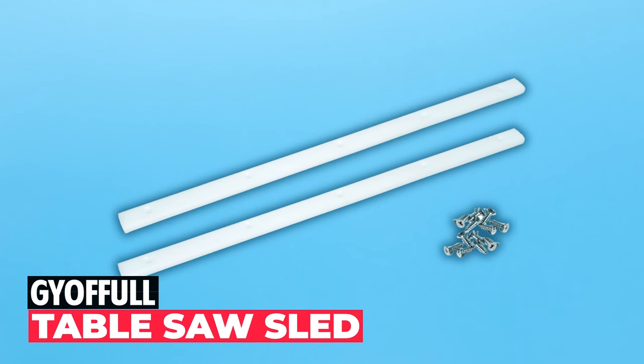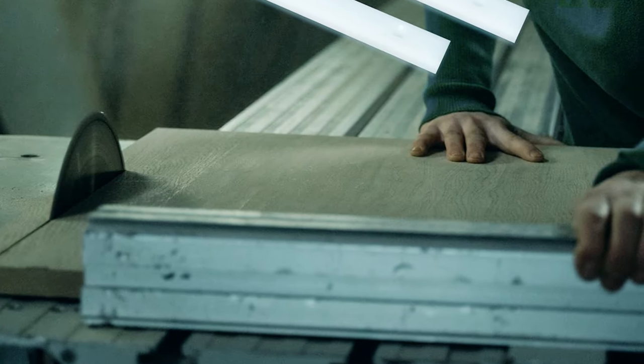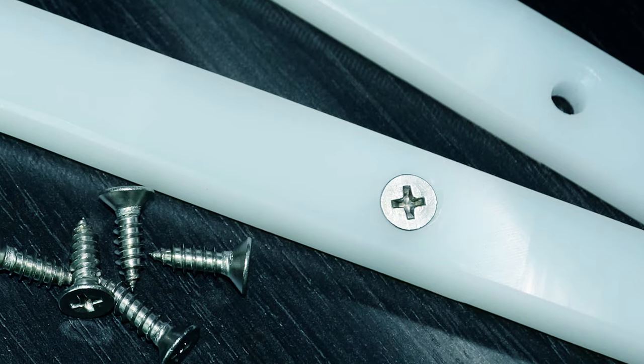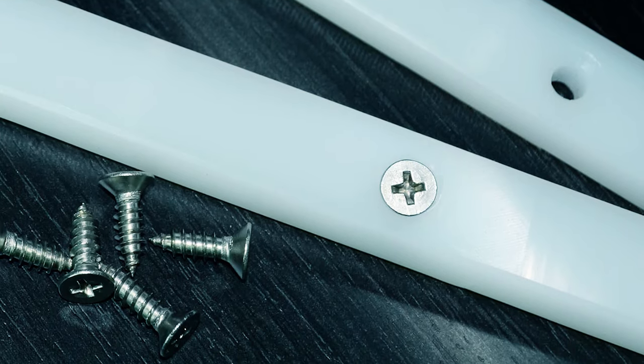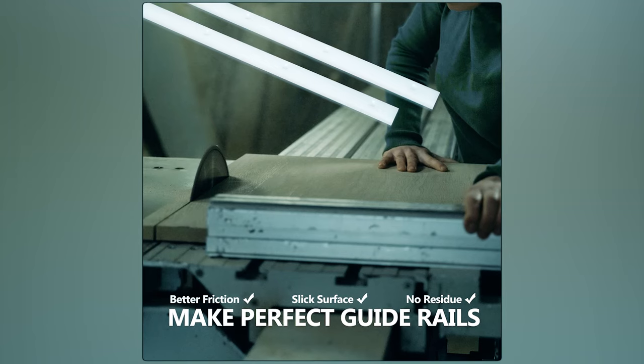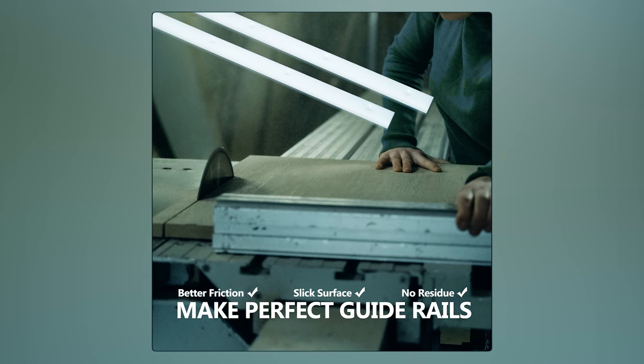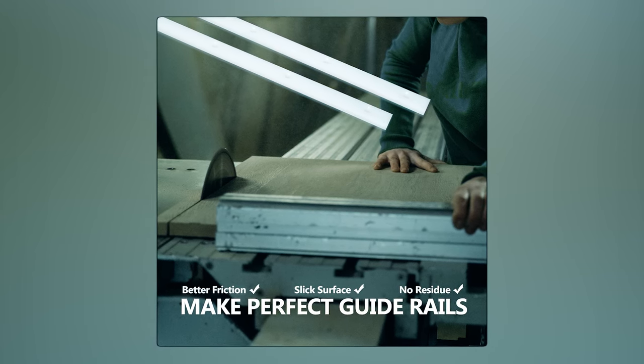Juffle Table Saw Sled. Upgrade your table saw capabilities with the Juffle Table Saw Sled. This set includes UHMW plastic strips, pre-drilled with screw holes and matching screws, making assembly a breeze. The smooth UHMW plastic surface ensures no burrs or sawdust and low friction for repetitive sliding.